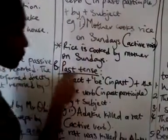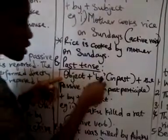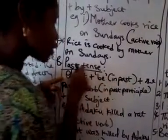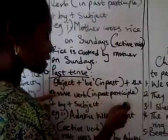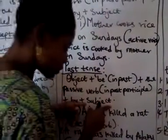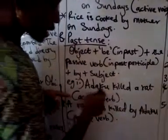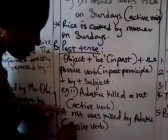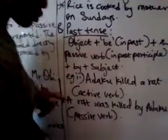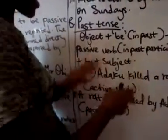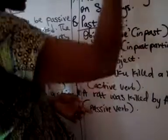The second rule is the past tense. The same thing goes for past tense: object plus B verbs in past, because it is the past tense, plus the passive verb in past participle, plus 'by,' plus subject. Example: 'Adapu killed a rat.' We change it to: 'A rat was killed by Adapu.' You notice that it's the same process as before, but the difference is that this is in the present and this is in the past.